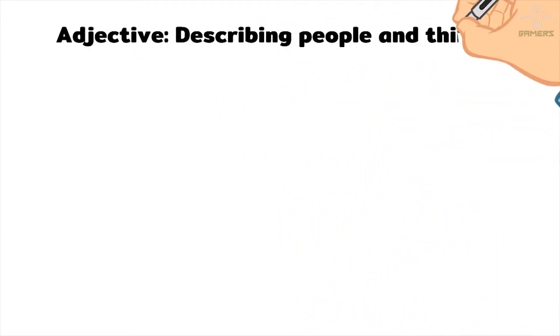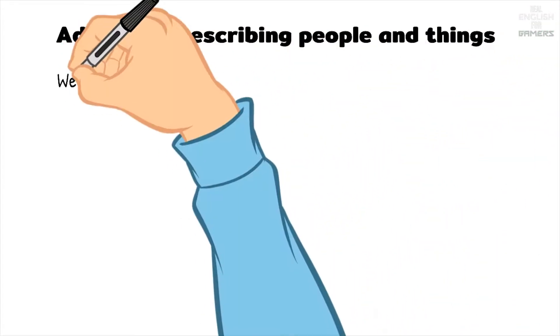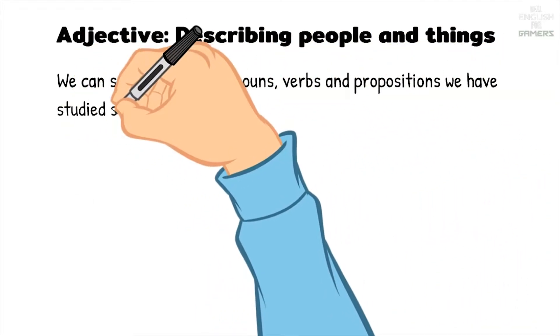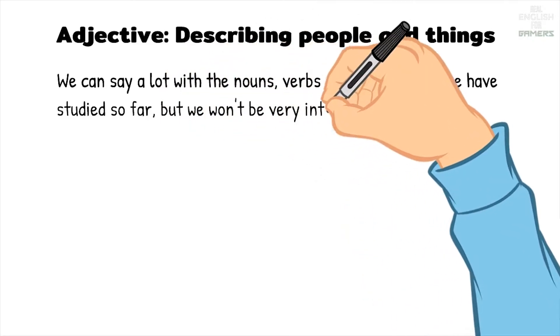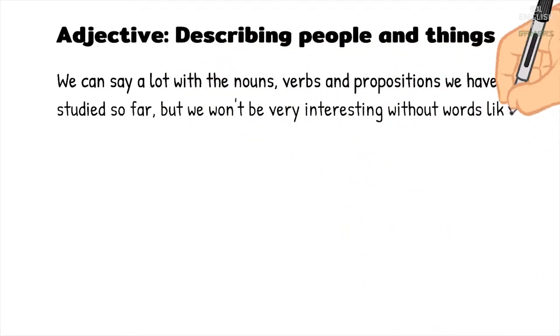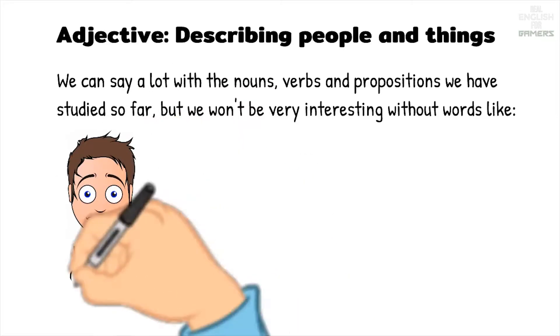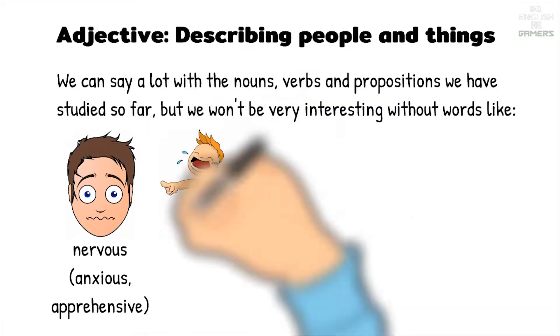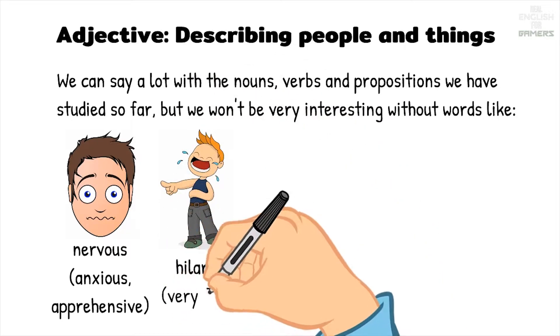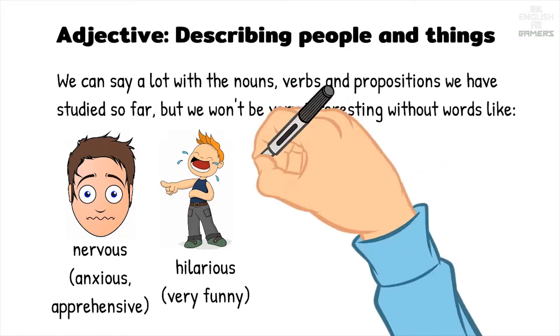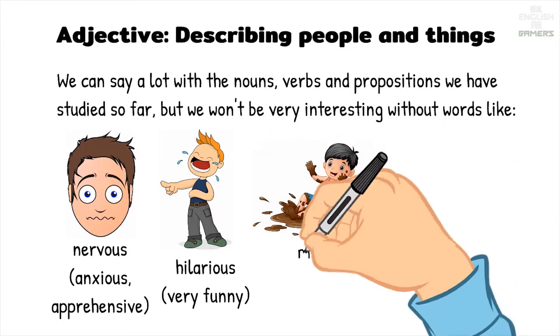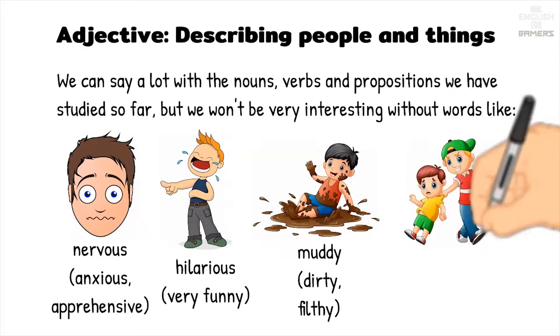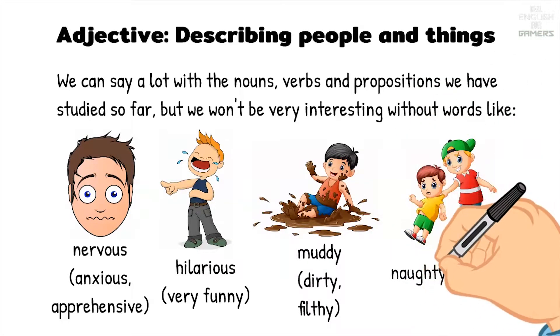Adjectives: describing people and things. We can say a lot with the nouns, verbs, and prepositions we have studied so far, but we won't be very interesting without words like nervous, anxious, apprehensive, hilarious, very funny, muddy, dirty, filthy, naughty, bad.